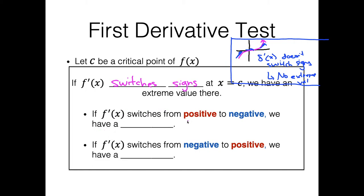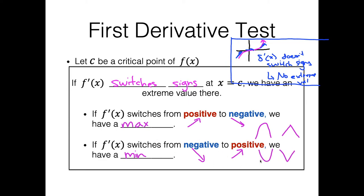If f prime of x switches signs from positive to negative — meaning the function goes up then down — we have a max. If f prime of x switches signs from negative to positive — going down then up — we have a min. We're taking advantage of this hill-like behavior of extreme values, and even the absolute value function, where the derivative would be undefined at the tip, fits into this pattern.